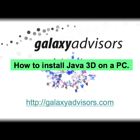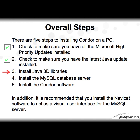Hello and welcome to Galaxy Advisors. The purpose of this video is how to install Java 3D on a PC. This is part of a five-step process to install Contour on a PC. You should have completed the first two steps: completing all the Microsoft high-priority updates and installing the latest Java update. Now we're going to install a special Java 3D library to help Contour visualize your data.